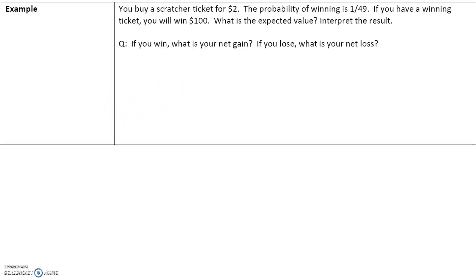Here's another example. You buy a scratcher ticket for $2. Once you spend that $2, it's gone whether you win or lose. The probability of winning is 1 over 49. If you have a winning ticket, you will win $100. What is the expected value? Interpret the results.